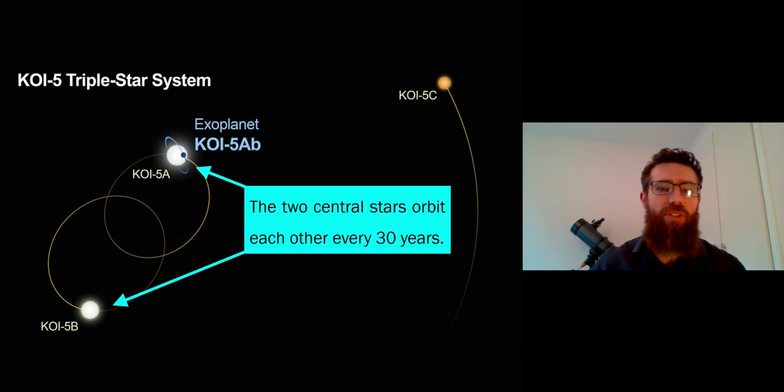The two central stars orbit one another about every 30 years. So those stars are still reasonably close to one another.